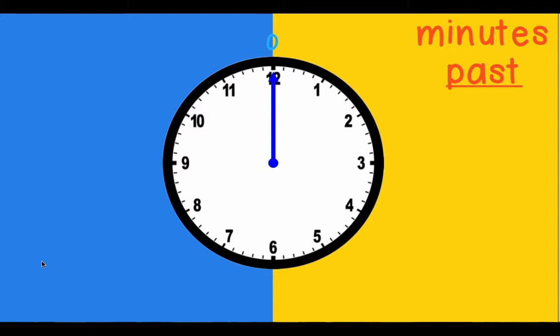So when the long hand or the minute hand is pointing to the twelve, no minutes have passed the hour. As we move around our large numbers, the hour numbers, they're actually representing our minutes past. And we know from just previously that the one represents five minutes.